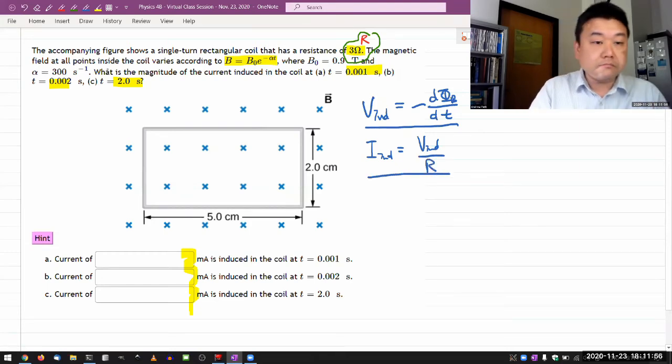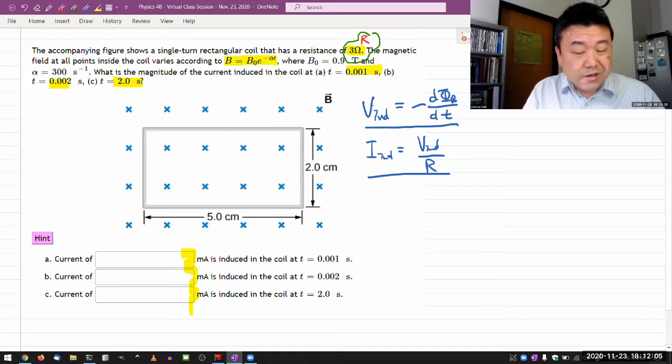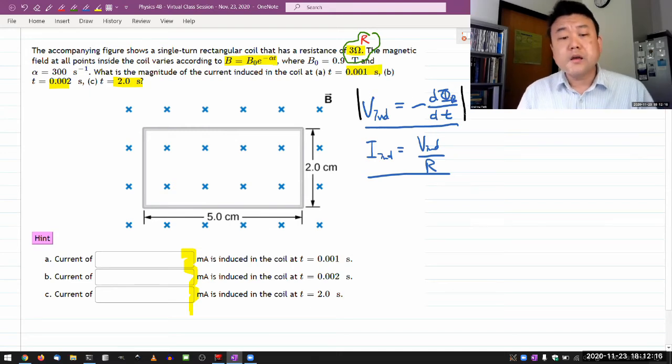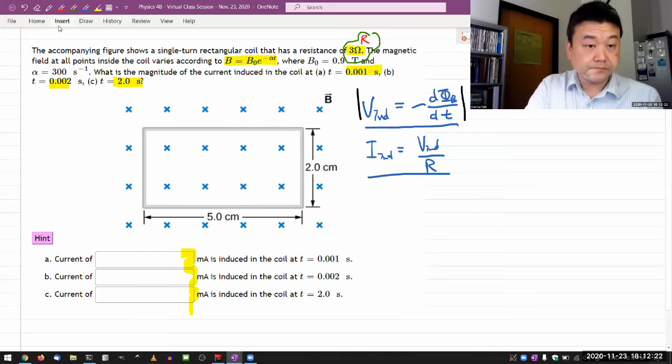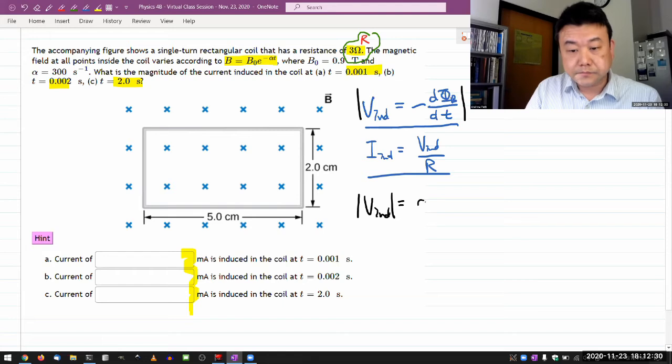So let me get the expression for the induced voltage. I'm just going to go through this and especially since the question isn't even asking us for the direction of current, I'm just going to be dealing with the absolute value. And at the end of the question, I will tell you what direction the current should be flowing as a matter of application of Lenz's law.